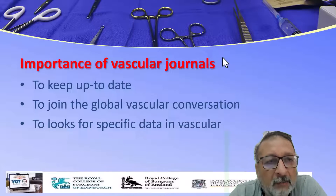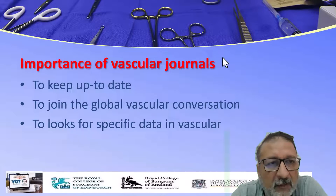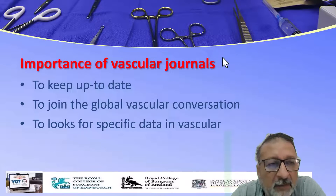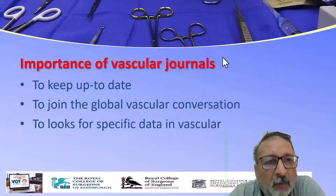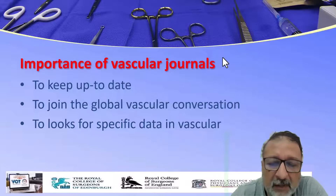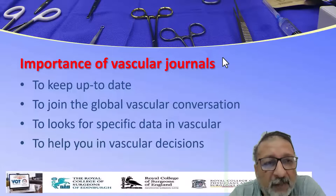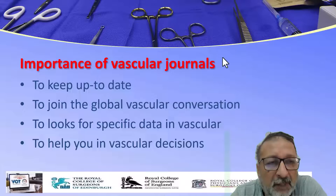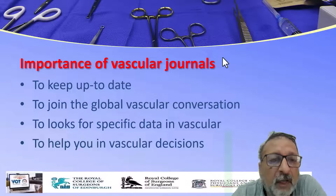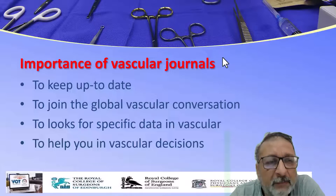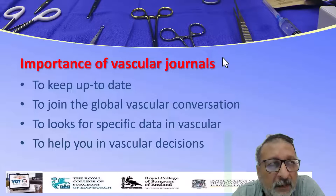Sometimes you look for specific data in vascular surgery. For example, if you have a patient with Ehlers-Danlos syndrome where you want to operate regarding either subclavian arteries or aortic aneurysm, you need to know what has happened in these cases, what the best guidelines are, and any recorded vascular cases similar to what you are facing. It will definitely help you in vascular decision making — extremely important.